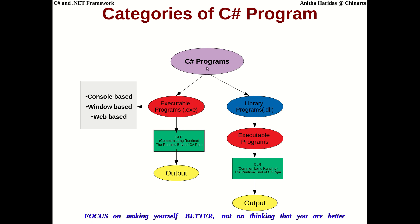To summarize: C# programs are of two types — executable programs and library programs. Executable programs can be console-based, window-based, or web-based. Library programs with extension .dll can be added as a component to executable programs, which are then given to the CLR, the runtime environment of C#, which produces the output.